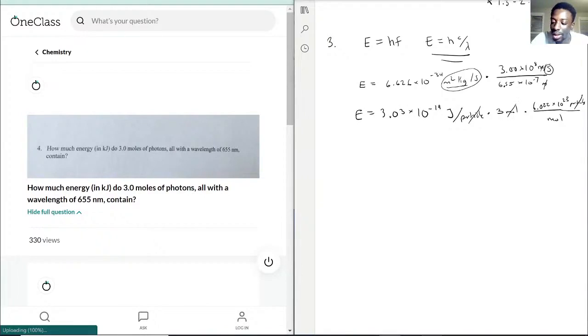So we have 3.03 times 10 to the negative 19 times 3 times that Avogadro's number. So the total energy produced from all those would actually be going to be 5.48 times 10 to the positive 2 kilojoules.